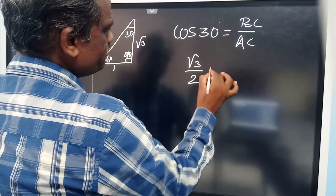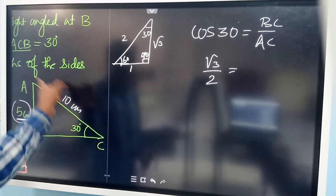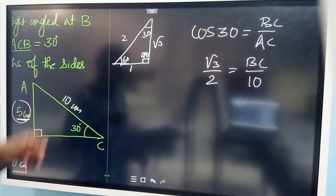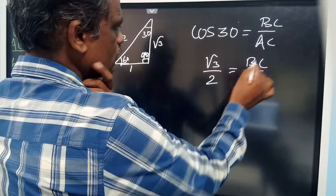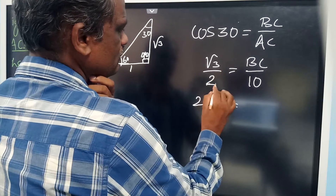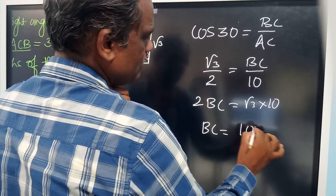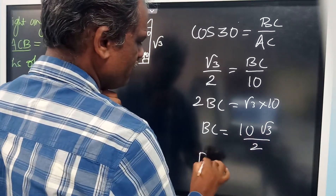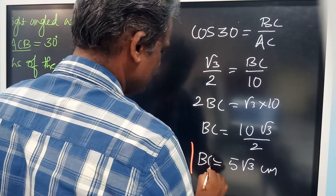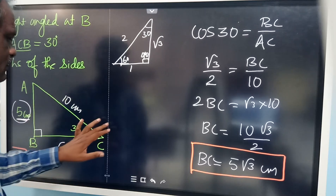So we write root 3 by 2 = BC by AC. Substituting AC = 10: 2 × BC = root 3 × 10 = 10 root 3. Therefore BC = 10 root 3 by 2 = 5 root 3 centimeters. So we have found all three sides of this triangle.